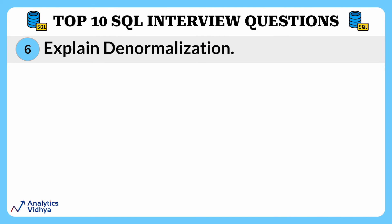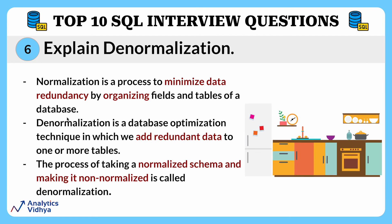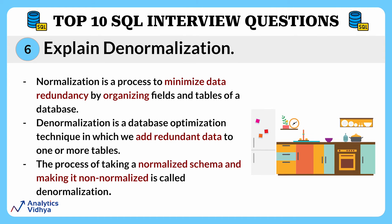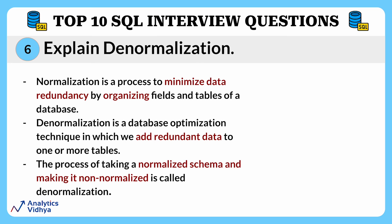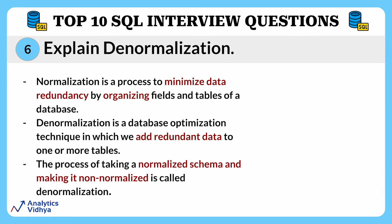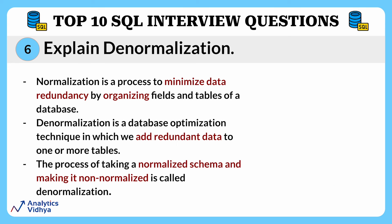The next question is: what do you understand about denormalization? First, let's understand normalization. Normalization is a process to minimize data redundancy by organizing fields and tables of a database — it's like organizing your kitchen, keeping things in separate drawers and cabinets so it's easier to find things and avoid redundancy. Denormalization is a database optimization technique in which we add redundant data to one or more tables. Sometimes we put data together in a way that's not super neat and organized, but it helps us find things faster. Importantly, denormalization does not mean reversing normalization — it is an optimization technique that is applied after normalization.